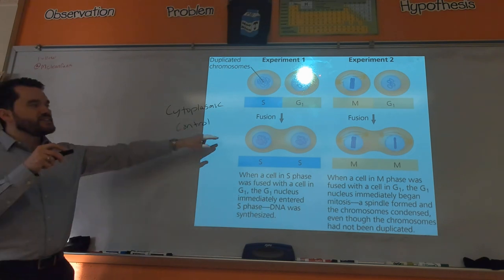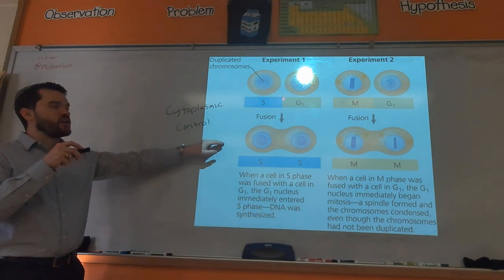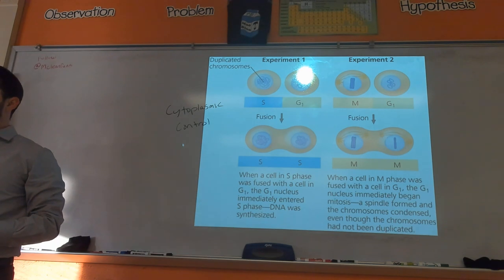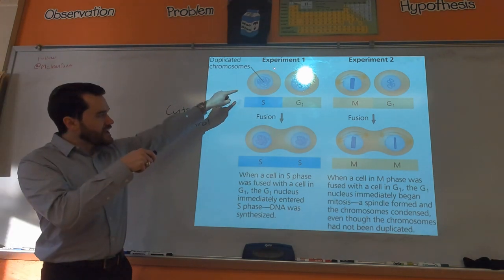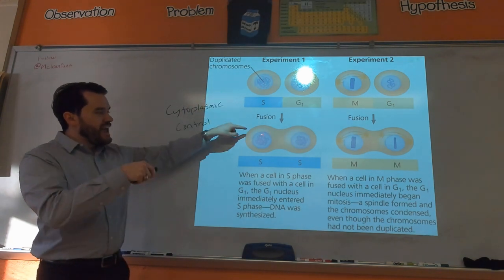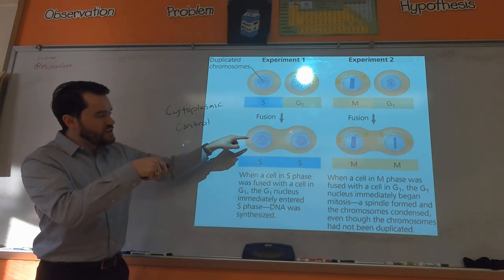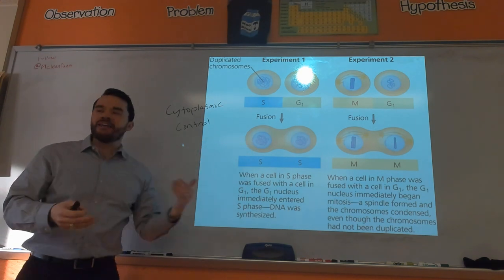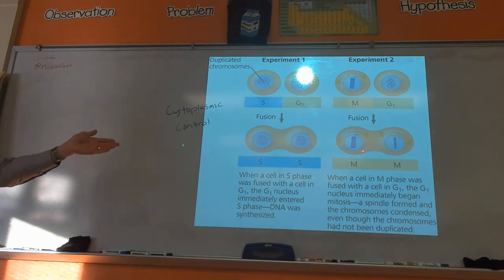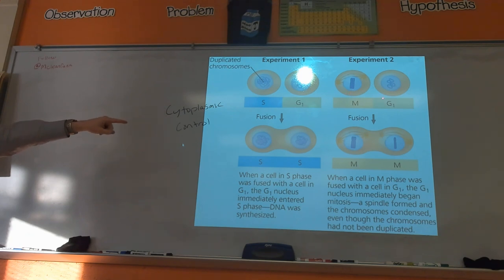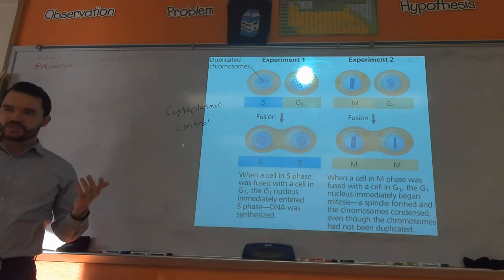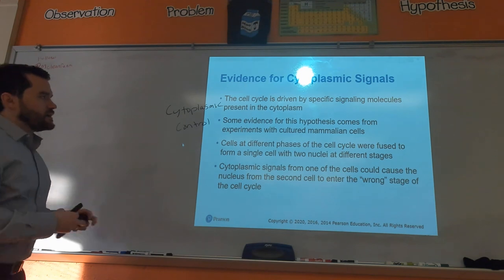When the cytoplasm of the S-phase cell was fused with the G1 cell, the G1 cell automatically started going through S phase. This tells us there must be molecular controls in the cytoplasm that migrate and signal the cell to start preparing for division. They repeated this with M phase and G1, and got the same result — the M-phase cytoplasm triggered the G1 cell to continue through the cell cycle.